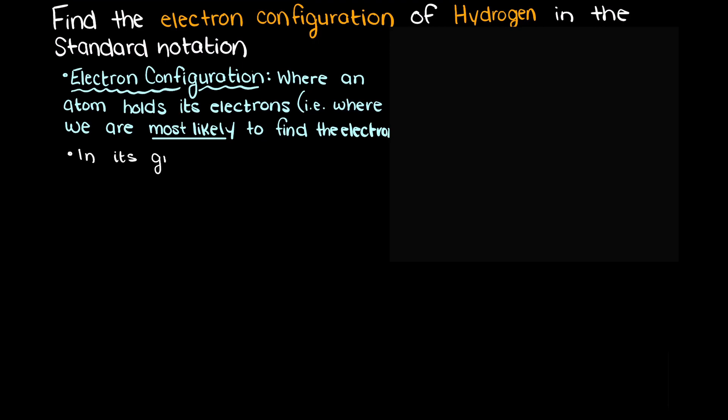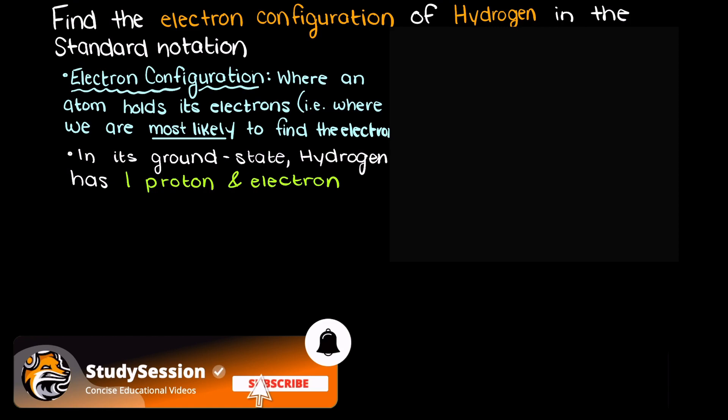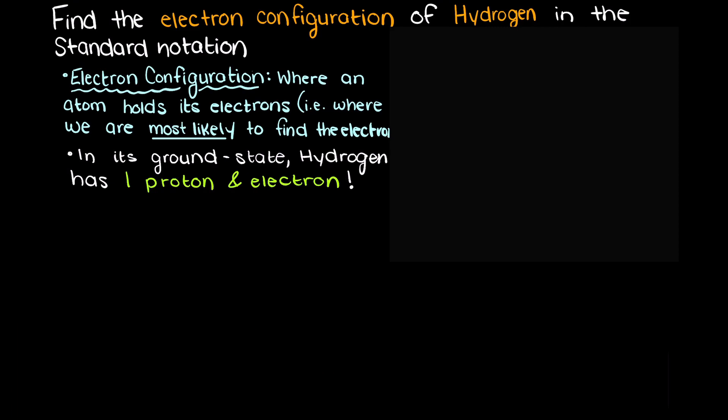Looking this up we find out that hydrogen is number 1 on the periodic table, meaning that in a neutral state, no positive or negative charge, our hydrogen will have one proton, likely one neutron, and one electron surrounding the nucleus.